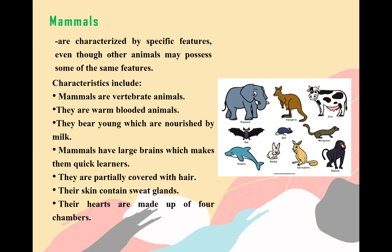Mammals are characterized by specific features, even though other animals may possess some of the same features. Characteristics include: mammals are vertebrate animals; they are warm-blooded; their young are nourished by milk; mammals have large brains which makes them quick learners; they are partially covered with hair; their skin contains sweat glands; and their hearts are made up of four chambers.